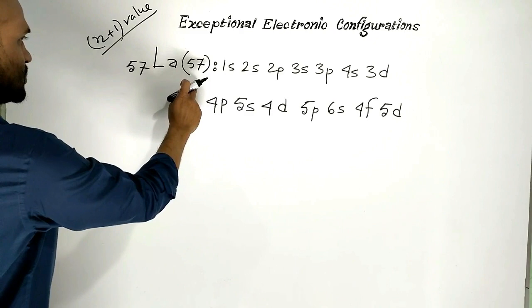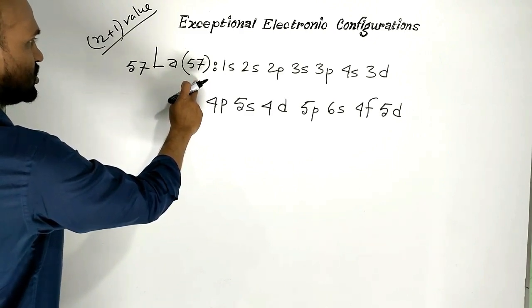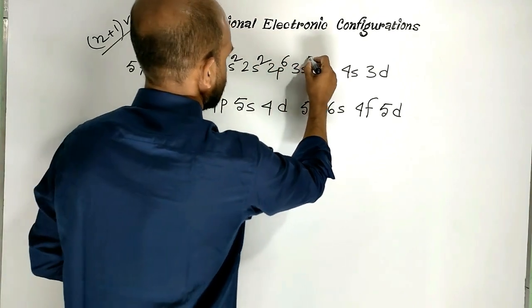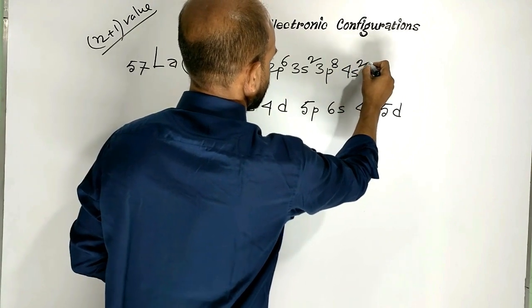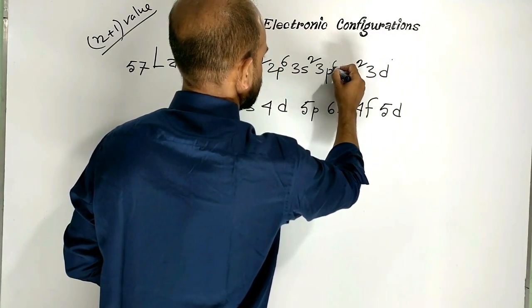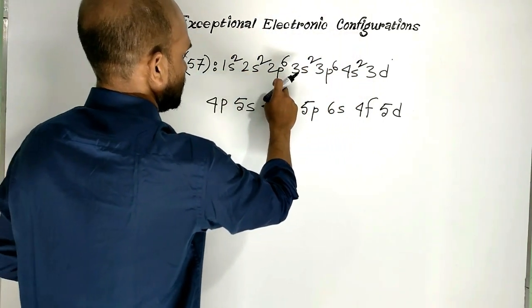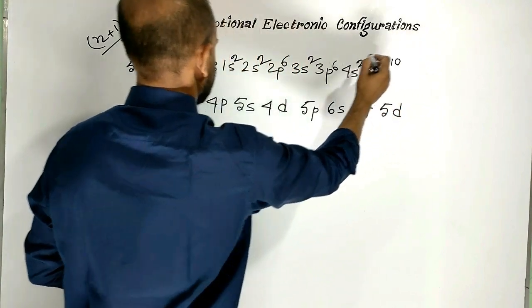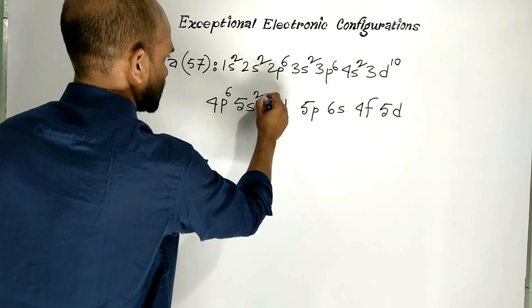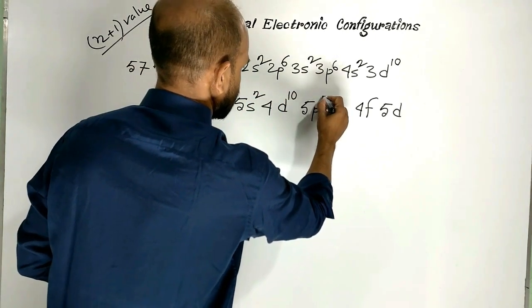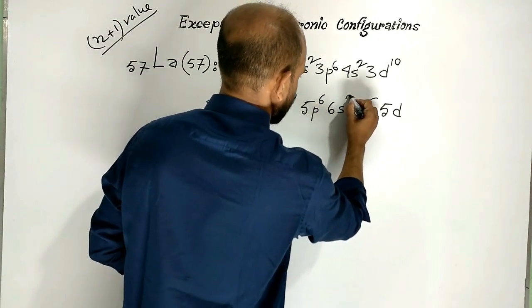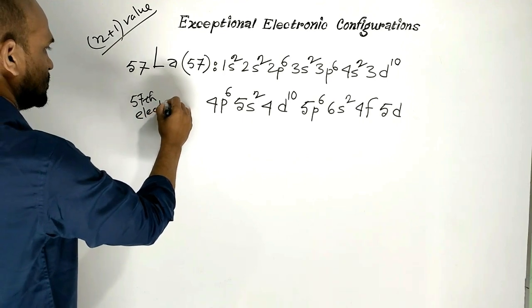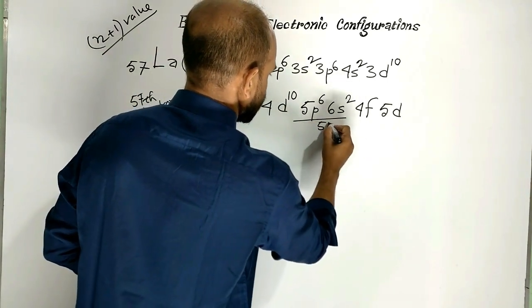Now let us distribute 57 electrons according to the above principle. Filling in order: 2, 4, 10, 12, 18, 20, then 30, 46, 48, 54, 56. Up to this we have placed 56 electrons. Now we consider the 57th electron.